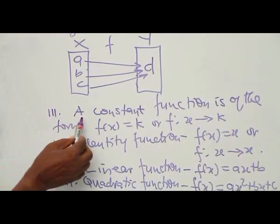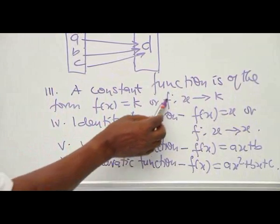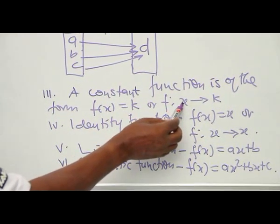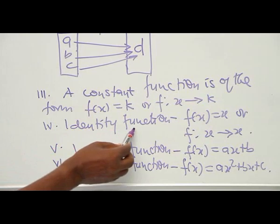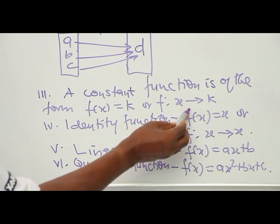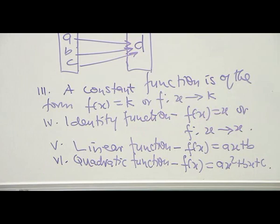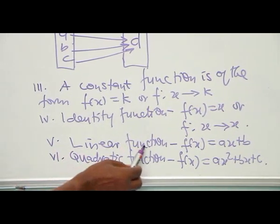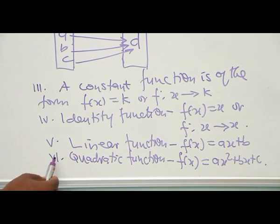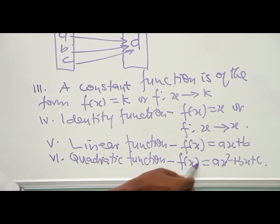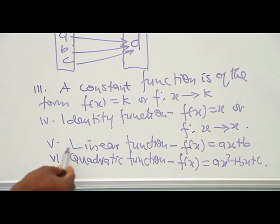Number three: the constant function. Number four: the identity function — a function such that S maps onto S. Number five: the linear function, of the form F(S) = AS + B. The quadratic function is of the form F(S) = AS² + BS + C. These are the major types of functions we will deal with.